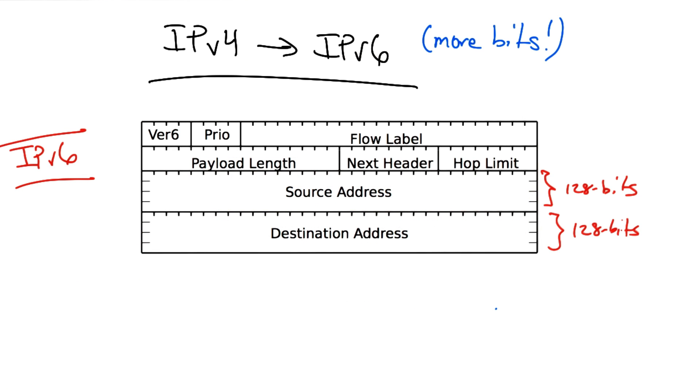By contrast, here's the IPv6 header. The IPv6 header provides 128 bits for both the source and destination IP addresses.